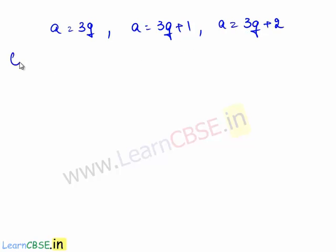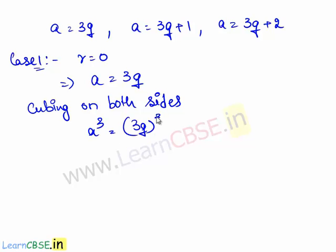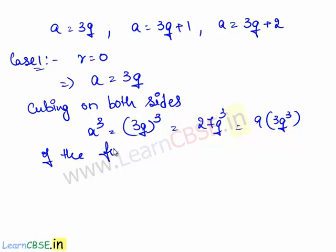Consider the first case where r equals 0, which implies a equals 3q. Cubing both sides, a³ equals (3q)³ which is 27q³. Now 27q³ can be written as 9 times 3q³. This is of the form 9m where m equals 3q³.